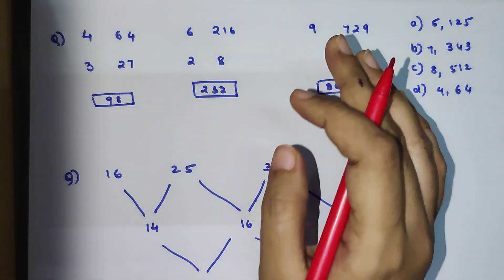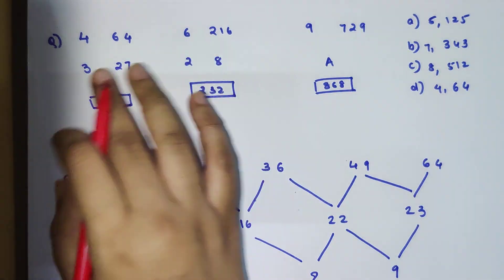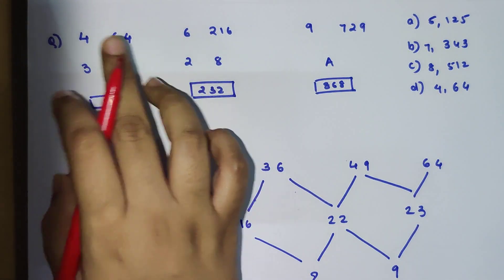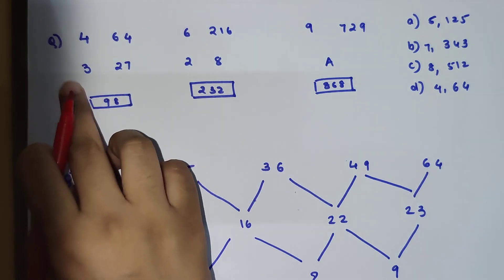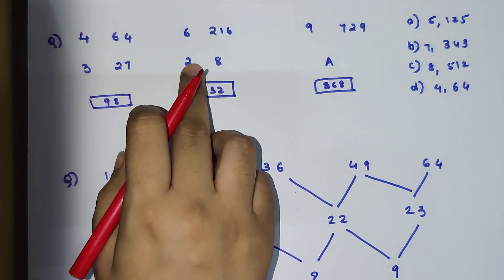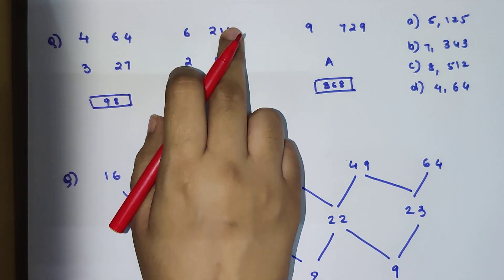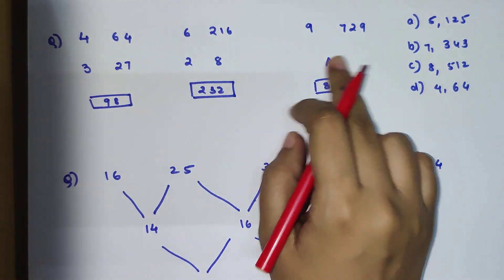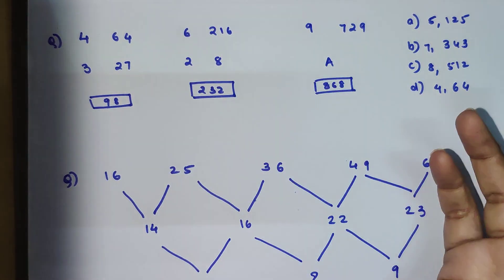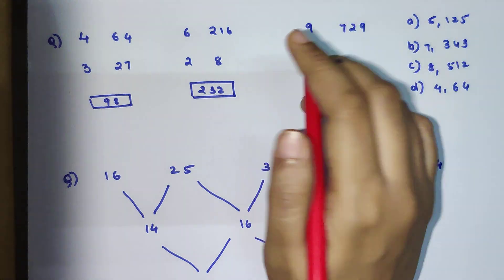By now I am assuming you must have understood that all these are pairs of cubes. 4 and 4's cube is 64, 3 and 3's cube is 27, 2 and 2's cube is 8, and 6 and 6's cube is 216. So here also, whatever we get has to be a cube and its original number.